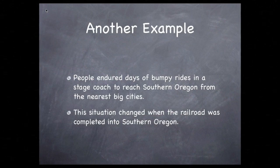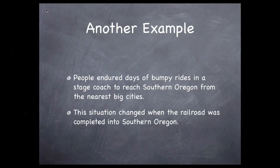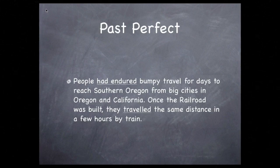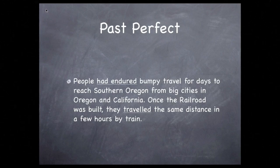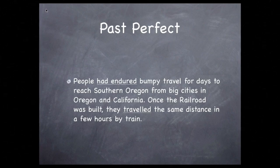Let's look at another example from the video. It was stated that people in the past had to endure days of bumpy rides in a stagecoach to reach Southern Oregon from the nearest big cities. It was also stated that this situation changed when the railroad was completed into Southern Oregon. People had endured bumpy travel for days on stagecoaches to reach Southern Oregon from big cities in Oregon and California. Once the railroad was built, they traveled the same distance in a few hours by train.